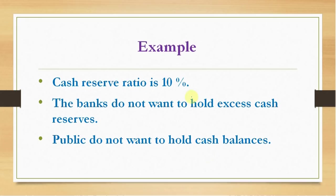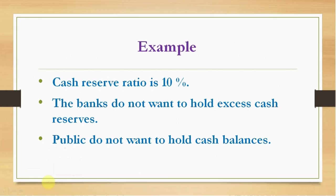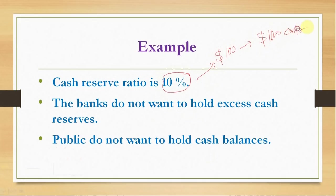Let us explain how the banking system can create credit out of the deposits maintained. Suppose that in the banking system the cash reserve ratio is 10%. What it means is that out of any $100 deposited in the banking system, the commercial banks maintain $10 as cash reserves in the central bank and they can use the rest $90. We next assume that the banks do not want to hold any excess cash reserves.